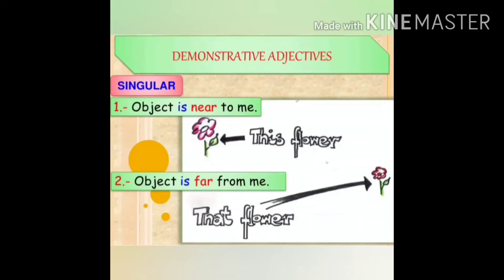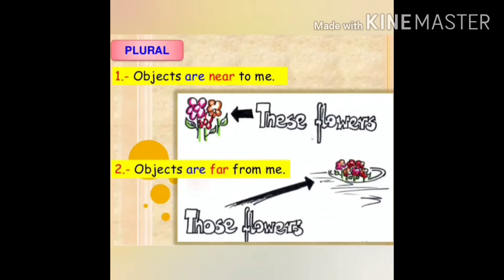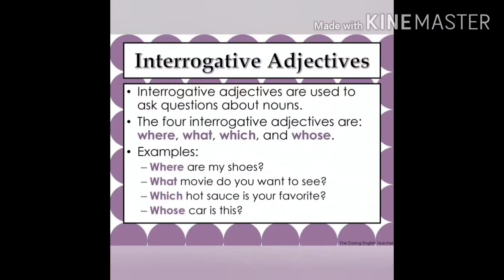Next, interrogative adjectives are used to ask questions and are always followed by a noun. Note that there are interrogative pronouns as well — we will discuss those in the next video on pronouns. For examples of interrogative adjectives: 'which topic are you going to talk about?', 'whose papers are you checking?', 'what problems are you facing?' Here 'which,' 'whose,' and 'what' come before nouns. When interrogative words are used as pronouns, they are preceded by a verb only.